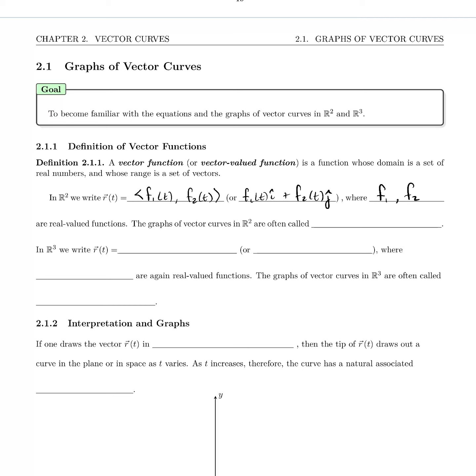Where f₁ and f₂ are real-valued functions, the kind that you're used to from high school and from your calculus course. The graphs of vector curves in R² are often called parametric curves.